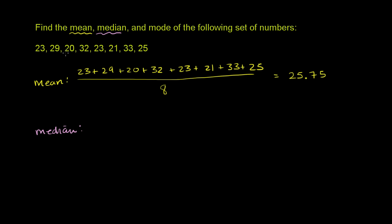So it looks like the smallest number here is 20. Then the next one is 21. Then we go, there's no 22 here. There are two 23s. So 23 and a 23.